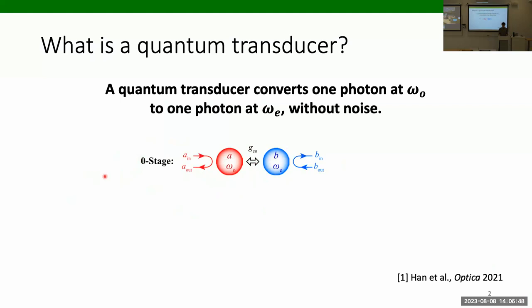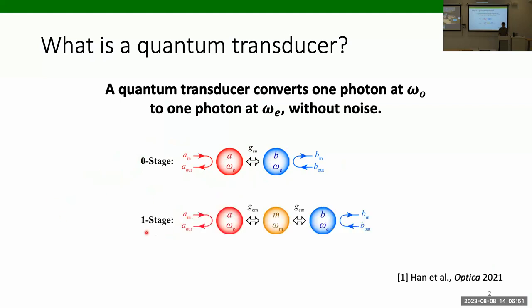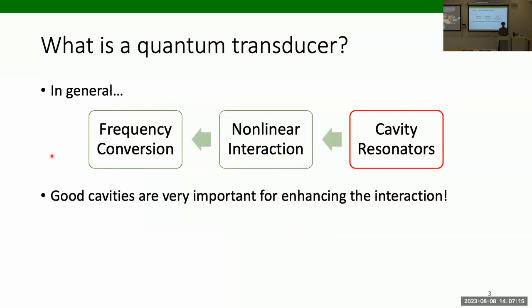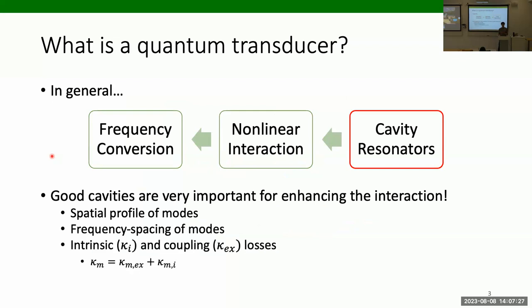We can think of a zero-stage, one-stage, and in fact an N-stage transduction scheme, where we have as many intermediate modes between our input and output modes as we want. In general, with these devices, our final goal is frequency conversion, and to do that we need some sort of nonlinear interaction. To enhance that nonlinear interaction, we use cavity resonators, which is where a lot of the engineering of these devices revolves around. Important design considerations include the spatial profiles of the modes, the frequency spacing of these modes, and the losses of these modes, both intrinsic and extrinsic.